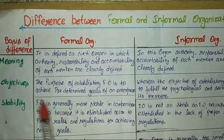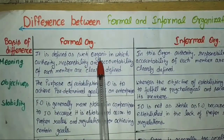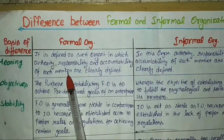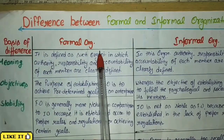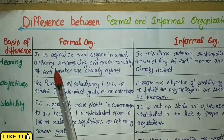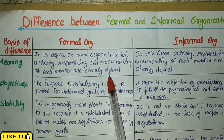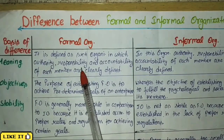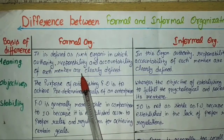First, the meaning of formal organization. It is defined as such an organization in which authority, responsibility and accountability of each member are clearly defined. In a formal organization, the authorities and responsibilities of every member are clearly defined — who will do which work, who are the superiors, who are the subordinates — all responsibilities are decided in advance and everyone has to perform their duties accordingly.